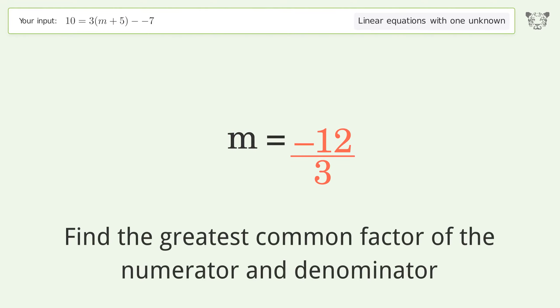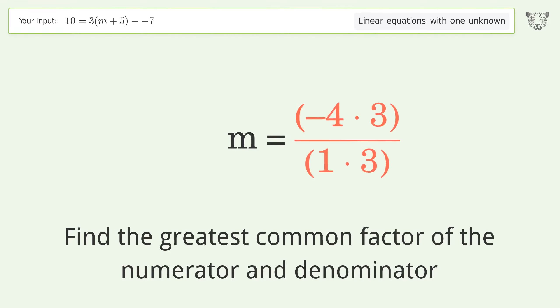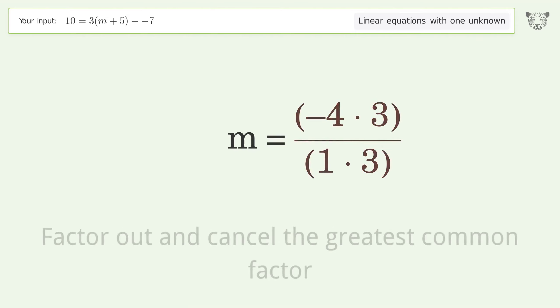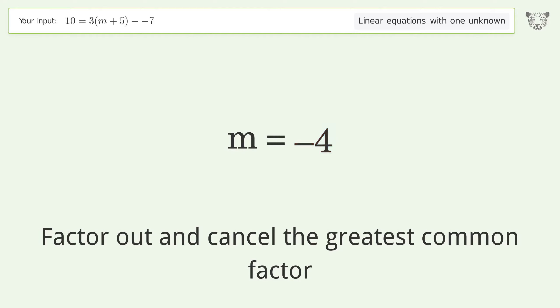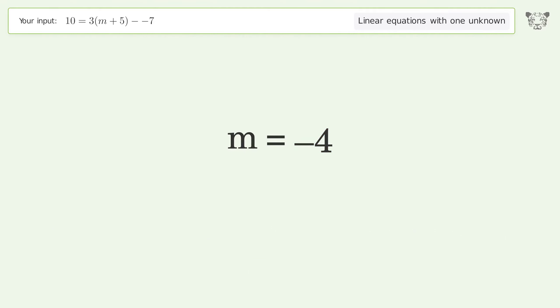Find the greatest common factor of the numerator and denominator, then factor out and cancel the greatest common factor. And so the final result is m equals negative 4.